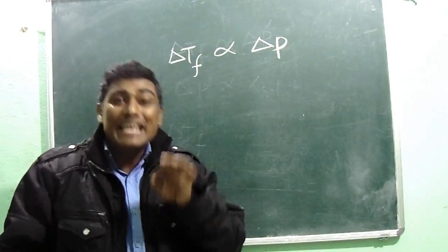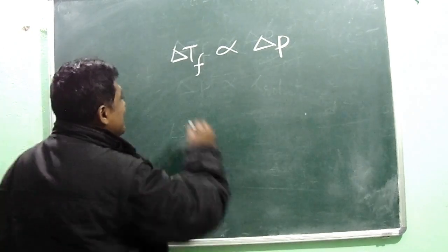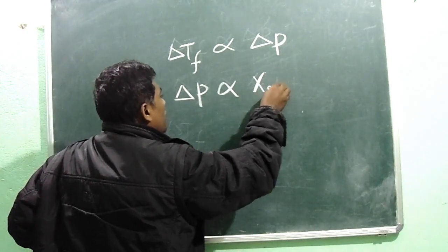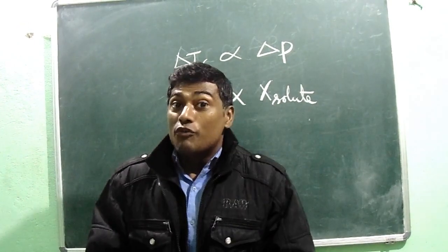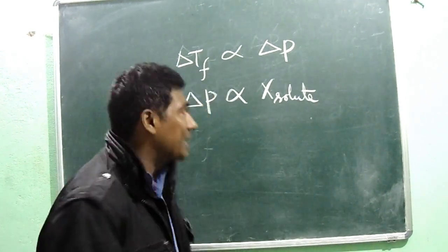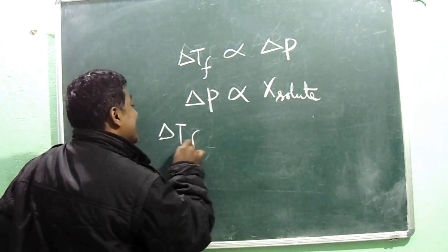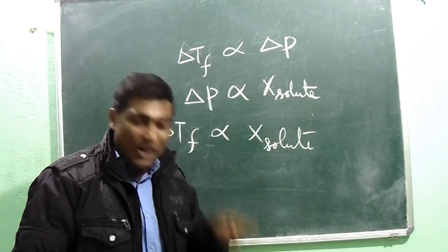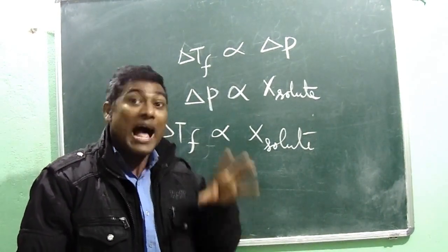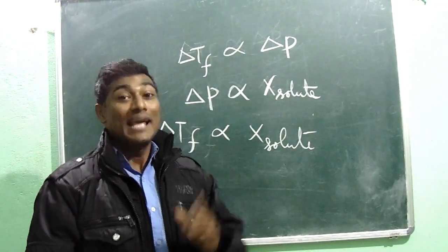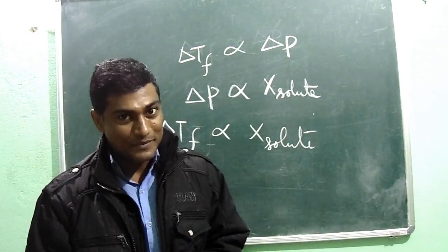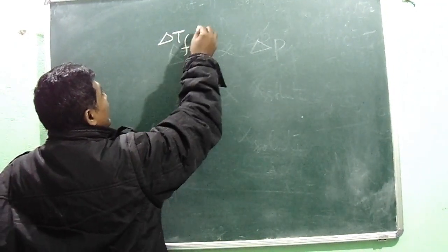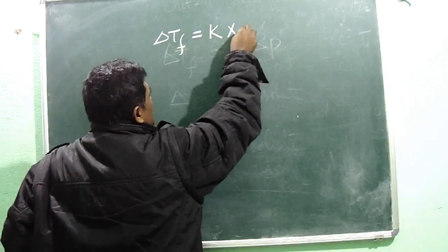This lowering in vapor pressure is in turn directly proportional to the mole fraction of the solute in the solution. From these two relationships, we can write ΔTf is directly proportional to x_solute. And accordingly, we can now derive how depression in freezing point is a colligative property. So, ΔTf = k × x_solute.